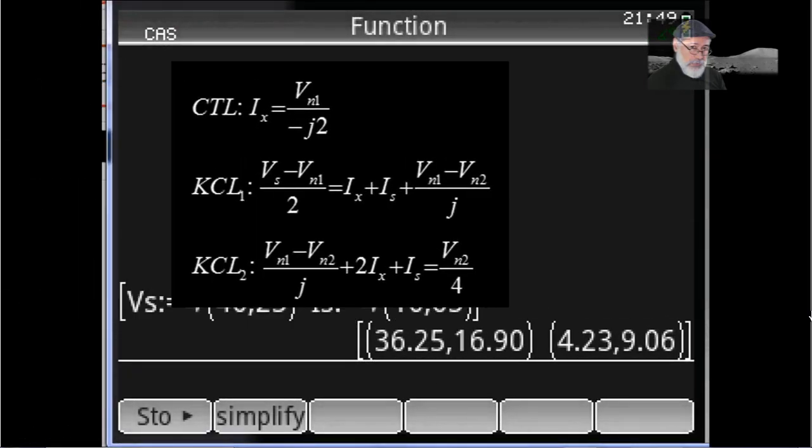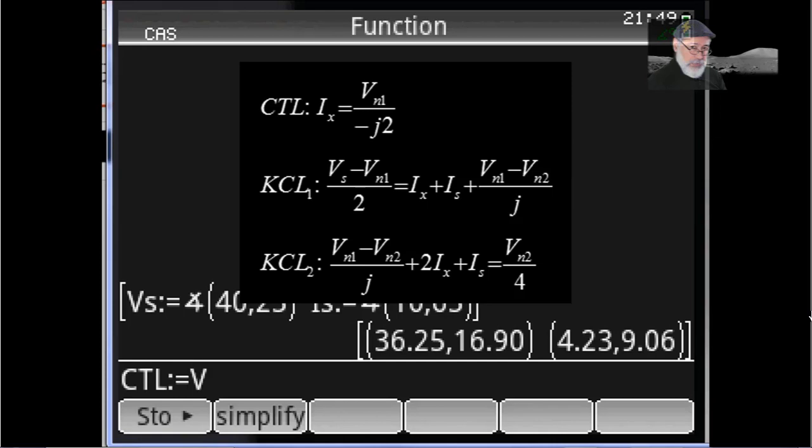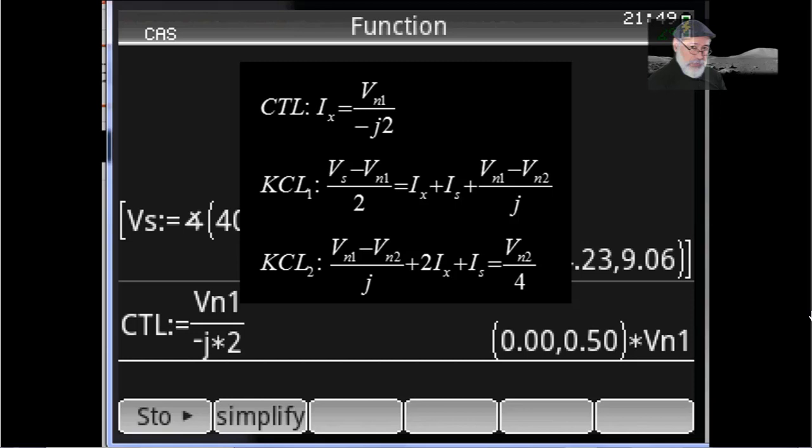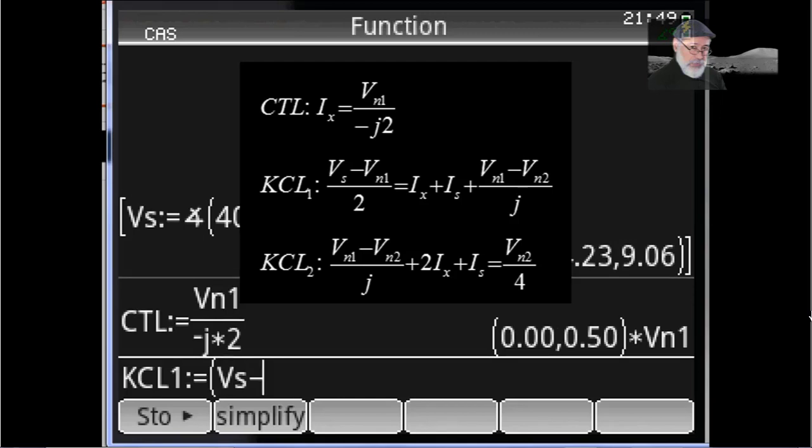Let's write now the equations. There. Those equations. CTL. Why do I label my equations? Because it's convenient. That way I can make reference to them in a way more compact manner later on. That's CTL.